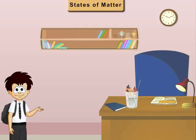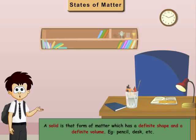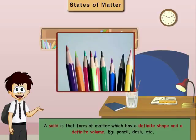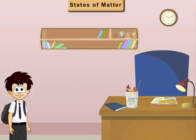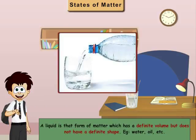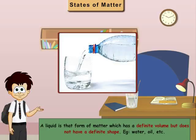Matter exists in solid, liquid or gaseous states which show different properties. A solid is that form of matter which has a definite shape and a definite volume. For example, pencil, desk, etc.